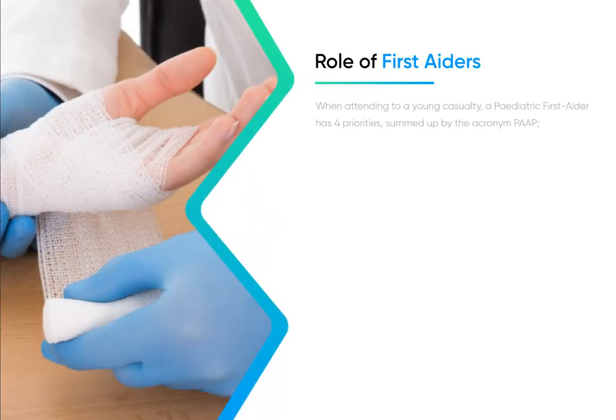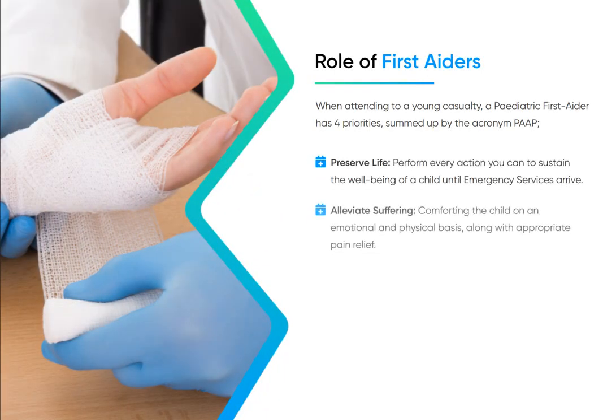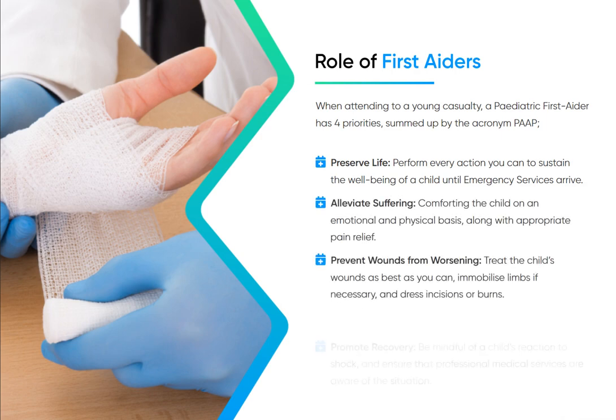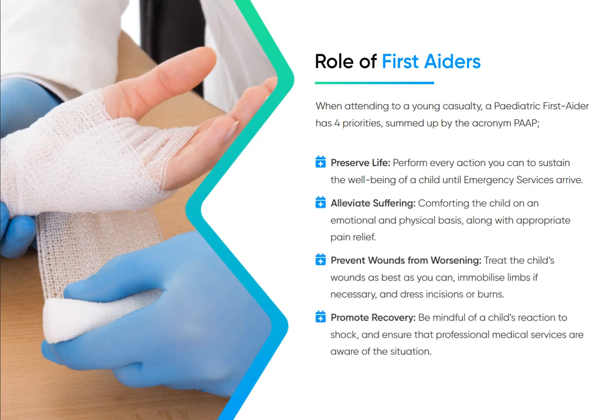When attending to a young casualty, a paediatric first aider has four priorities, summarised by the acronym P.A.A.P. The first is to Preserve Life — performing every action possible to sustain the wellbeing of a child until emergency services arrive. The second is to Alleviate Suffering — comforting the child both emotionally and physically, along with providing appropriate pain relief.